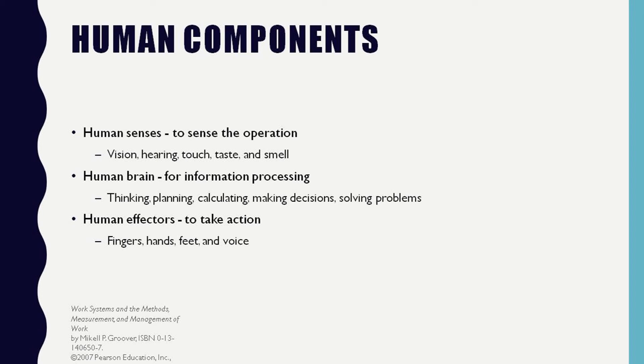Another part of the human component is human effectors, which take action. These are fingers, hands, feet, and voice. An effector is a body part with muscles or groups of muscles that actuate in response to a stimulus. Human effectors are supported by the musculoskeletal system, and the stimulus is provided by information processing occurring in the human brain.